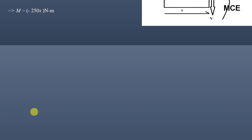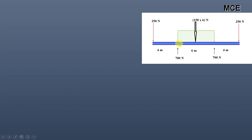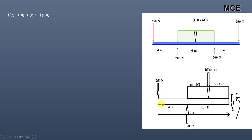The moment function for the first portion of the beam from 0 to 4 meters is minus 250x. For the next portion from 4 to 10 meters, we look at the free body diagram. On this portion, a force of 250 newtons and a UDL of 150 into (x minus 4) acts, since x is measured from the left and the UDL starts at 4 meters. So the UDL length is x minus 4, and it acts at a distance of (x minus 4)/2 from support A.